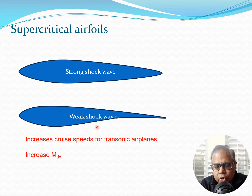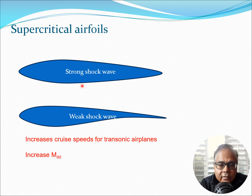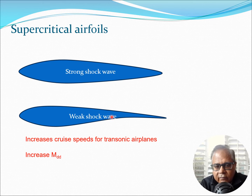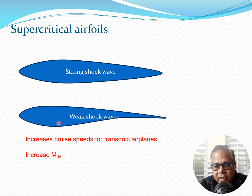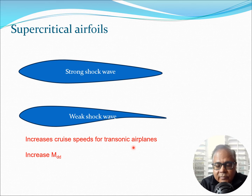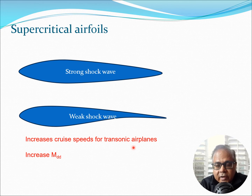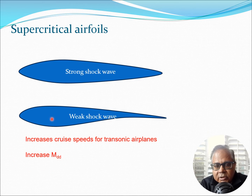There are certain airfoils known as supercritical airfoils which are designed so that shock waves are weak. With a conventional airfoil at transonic velocities you encounter strong shock waves causing substantial flow separation and high drag. Supercritical airfoils, shaped somewhat differently, produce only a weak shock wave, resulting in less flow separation. This allows the cruise speed to be increased for transonic airplanes — valuable for long-haul flights where minimizing travel time matters, and increasing M_DD is the key.